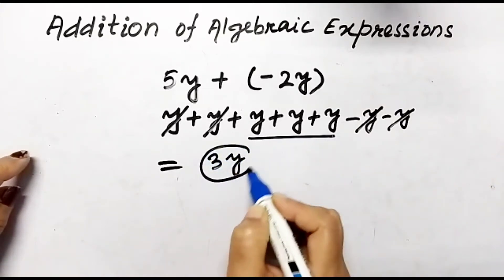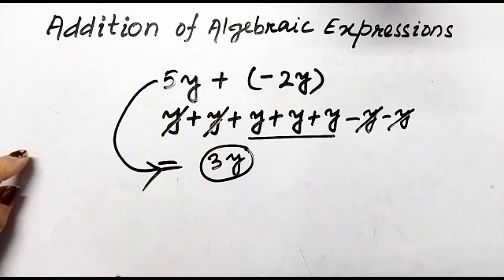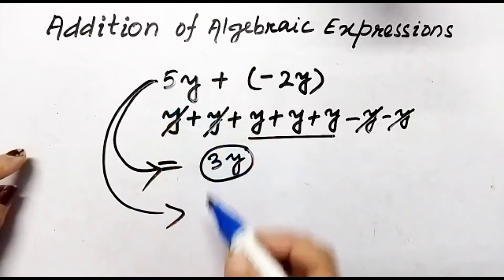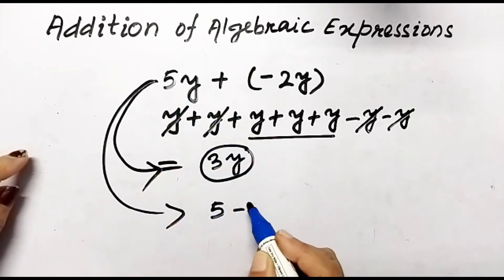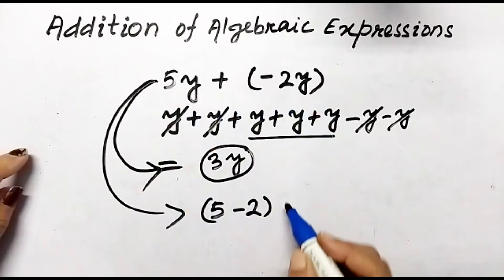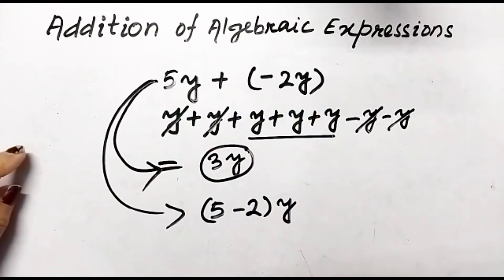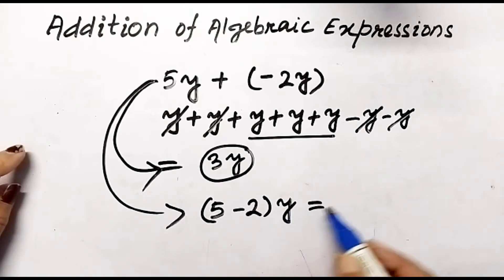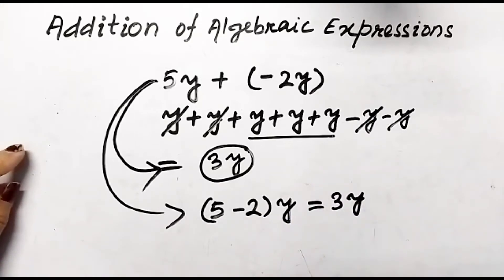This is the sum of these two algebraic expressions. In another way, we can add both the coefficients: 5 and negative 2, and simply write the variable. So 5 minus 2 equals 3y. This is the addition of two monomials.